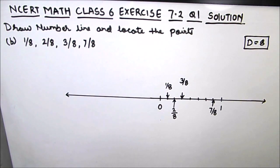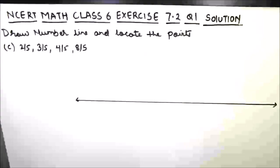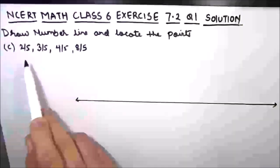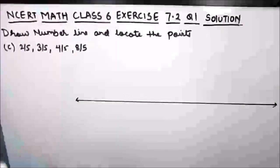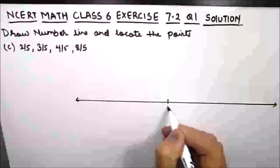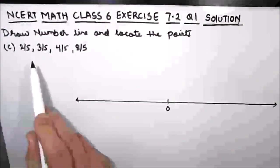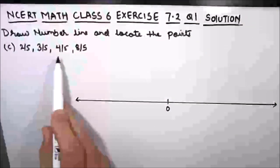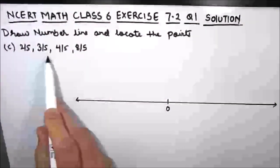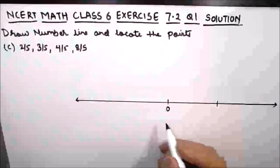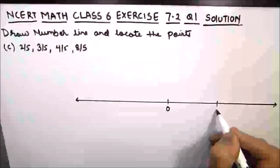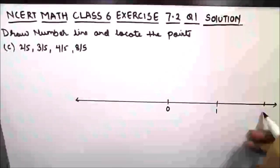So this is how we locate the points on the number line. Let's move on to Part C. In the last part of the question we have 2/5, 3/5, 4/5, and 8/5. First we will mark 0, then check the denominator — here the maximum denominator is 5.